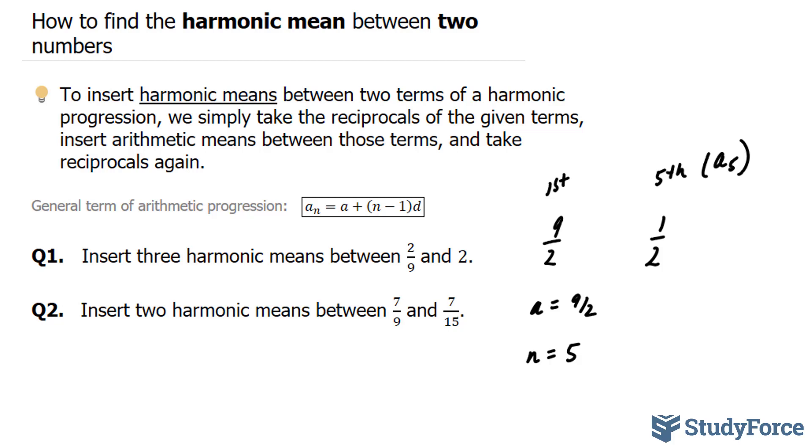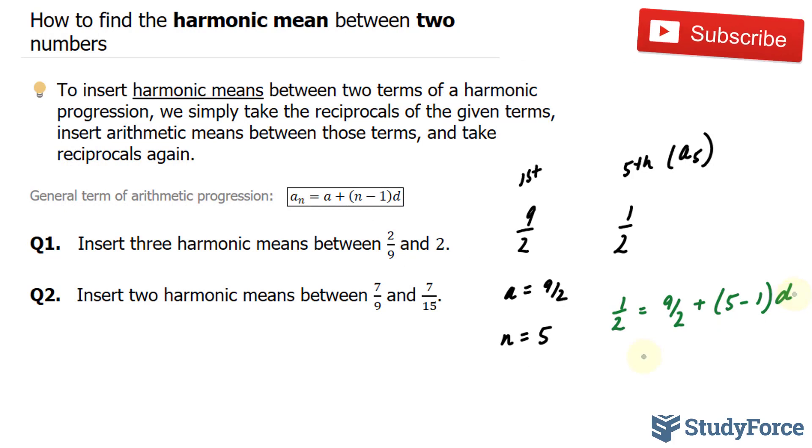Let's substitute what we know. a subscript 5 is half. a is 9 over 2 plus n is 5 minus 1 times d. Bringing this 9 over 2 to the left side gives us half minus 9 over 2. And on the right side, this simplifies to 4d.